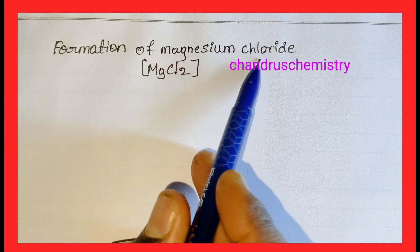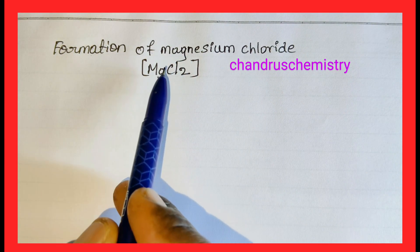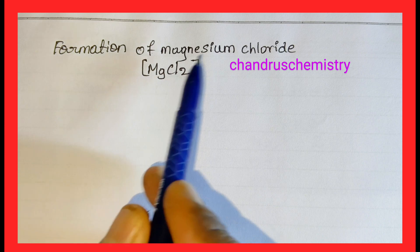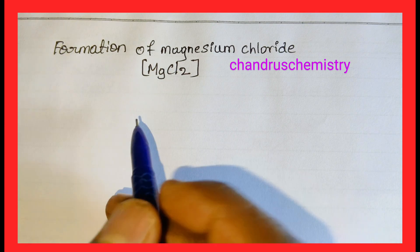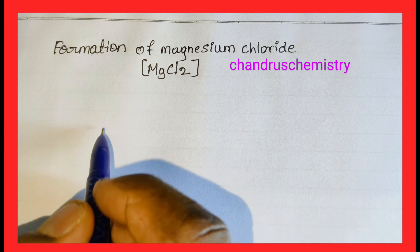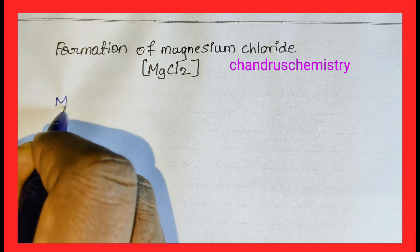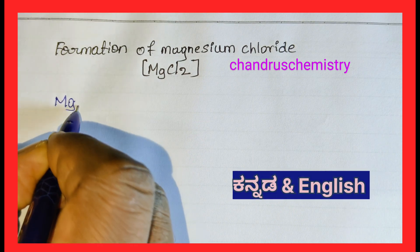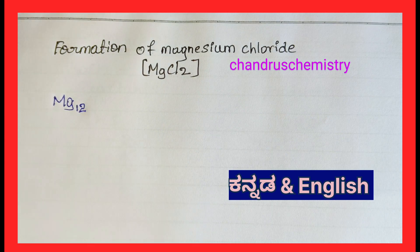Formation of Magnesium Chloride. Magnesium symbol is Mg and Chlorine symbol is Cl. The atomic number of Magnesium is 12.